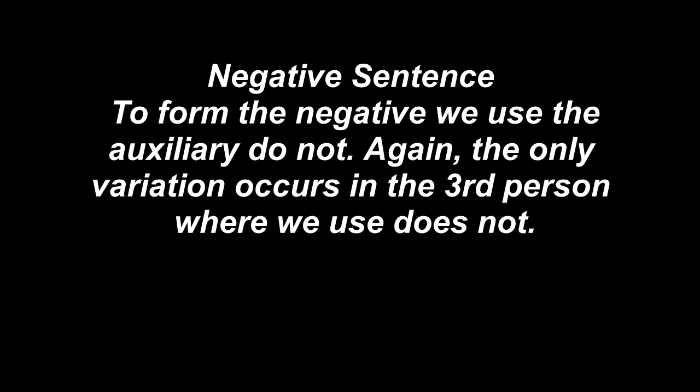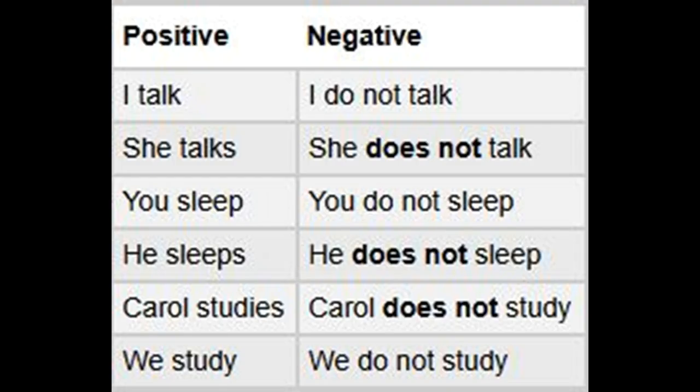To form the negative, we use the auxiliary 'do not'. The only variation occurs in the third person, where we use 'does not'. For example: I talk — I do not talk. She talks — she does not talk. You sleep — you do not sleep. He sleeps — he does not sleep. Carol studies — Carol does not study. We study — we do not study.